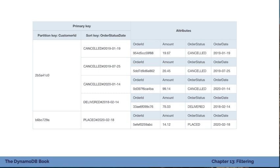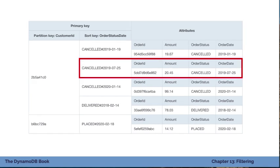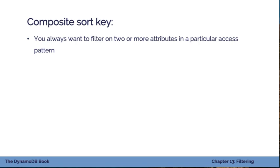Now if we want to search on a particular status within a particular date range, we can do that easily. For example, finding all items that were canceled between June 2019 and December 2019 for a particular user. The composite sort key is good when you always want to filter on two or more attributes in a particular access pattern. The key requirement is that at least one of those attributes needs to be an enum-like value with a limited number of options that you'll always do an exact match on, and then you can do a range query on the later value.